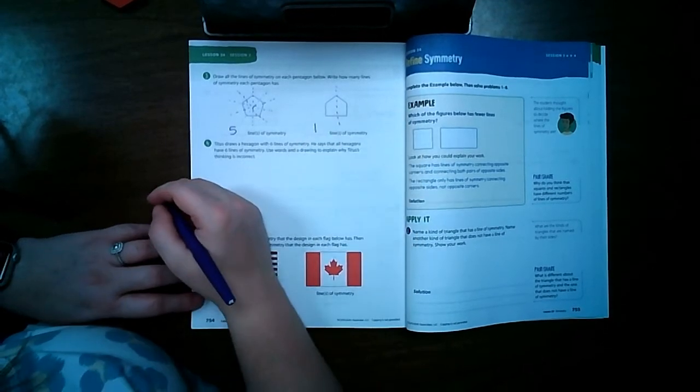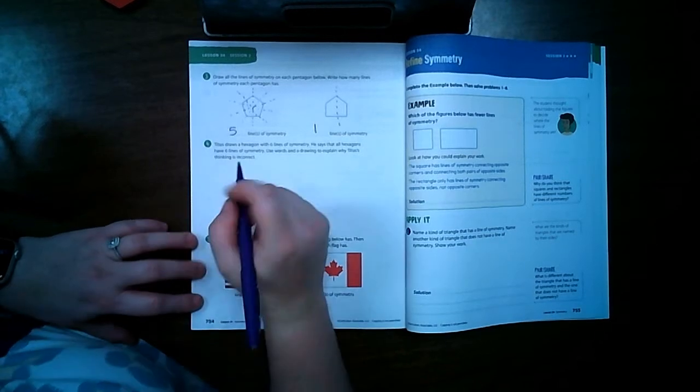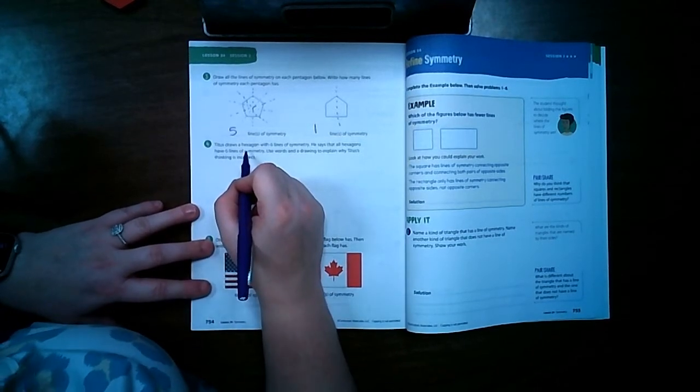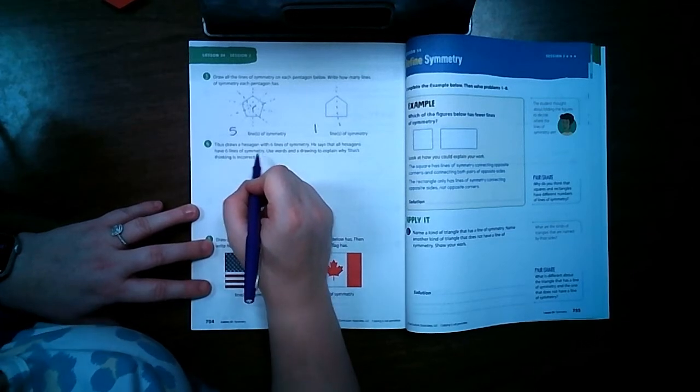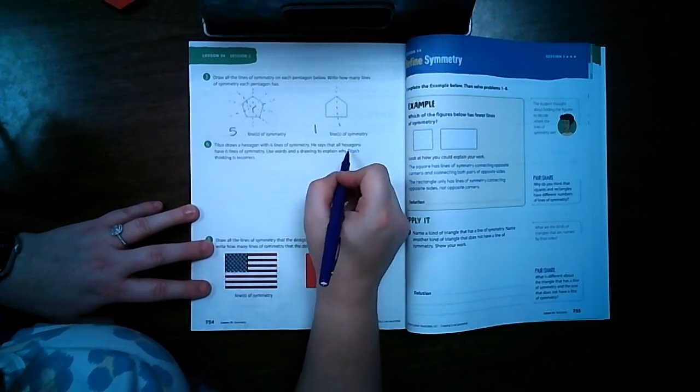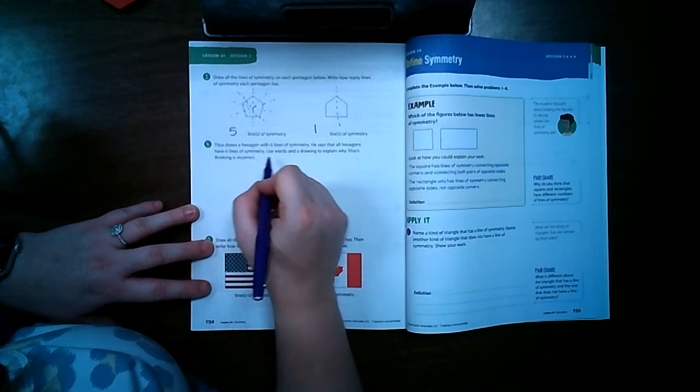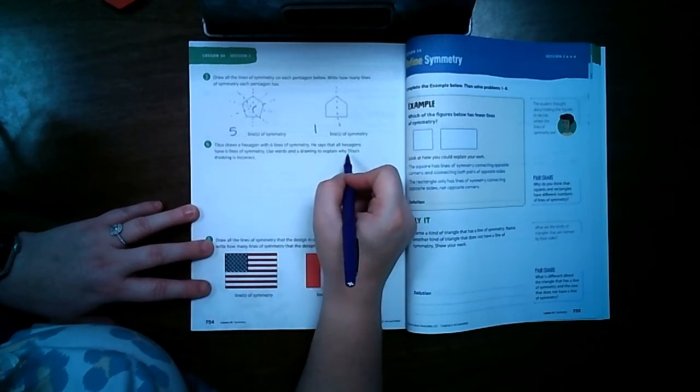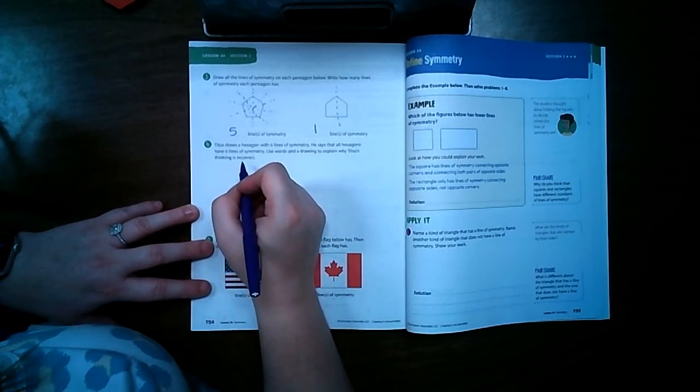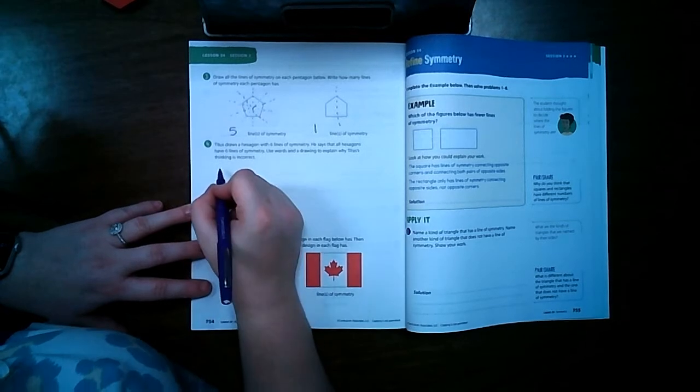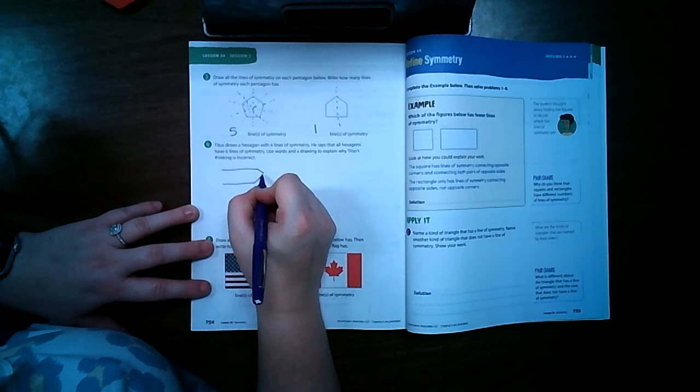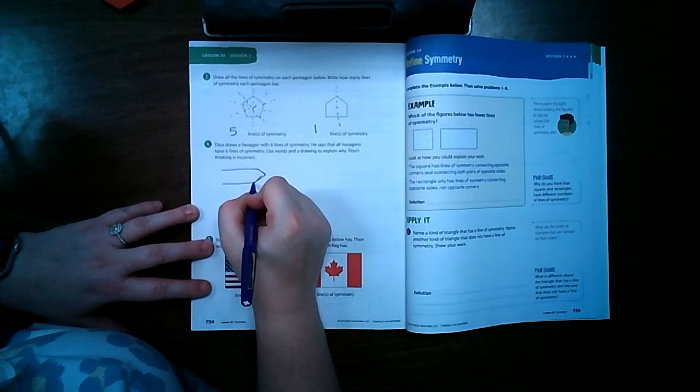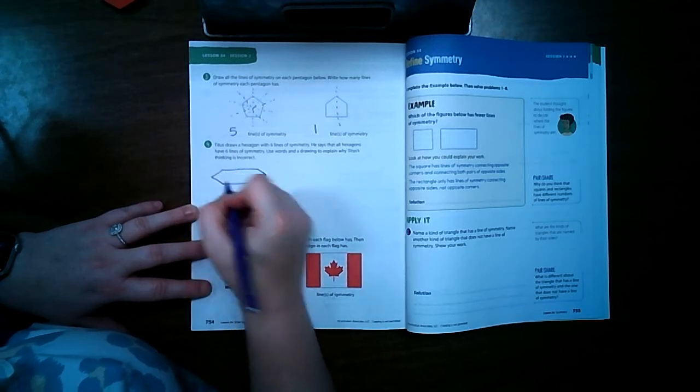Titus draws a hexagon with six lines of symmetry. He says that all hexagons have six lines of symmetry. Use words and a drawing to explain why Titus's thinking is incorrect. So I'm gonna draw a hexagon, let's make it like this. That's not very even, okay there we go.